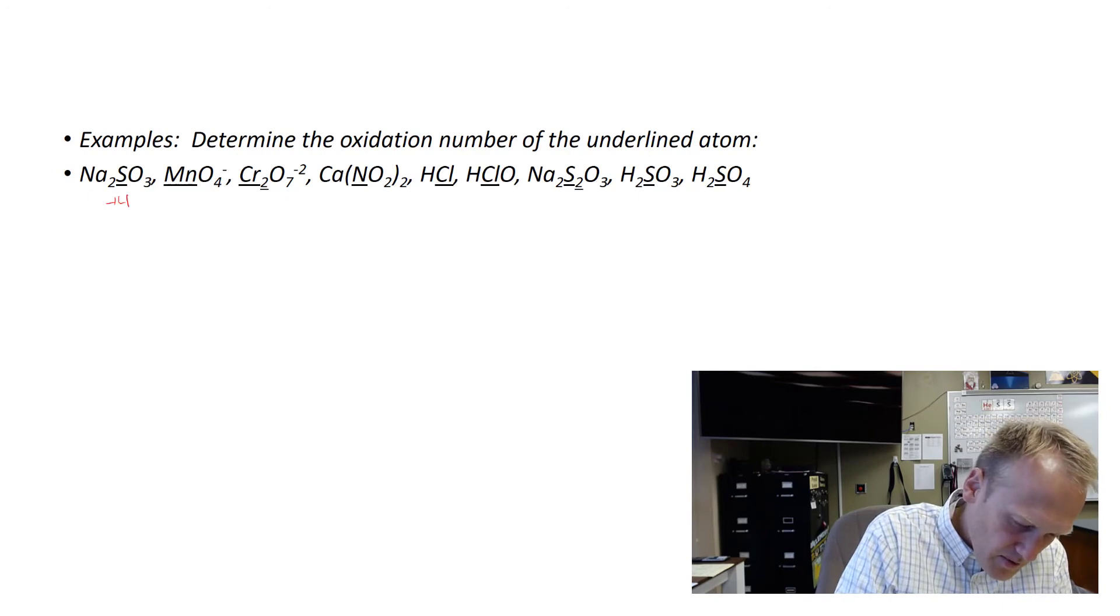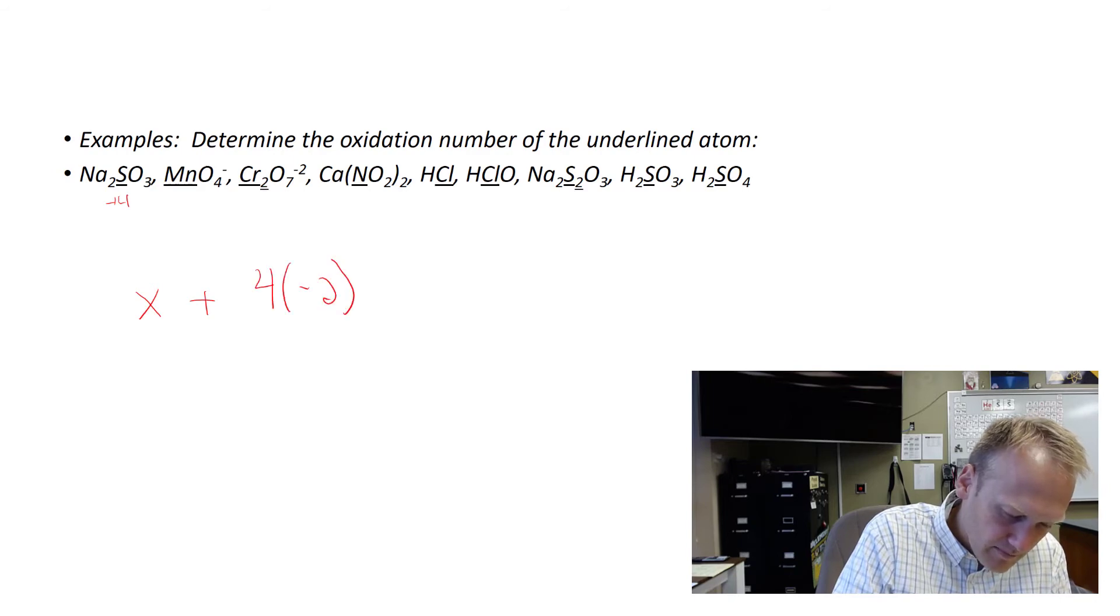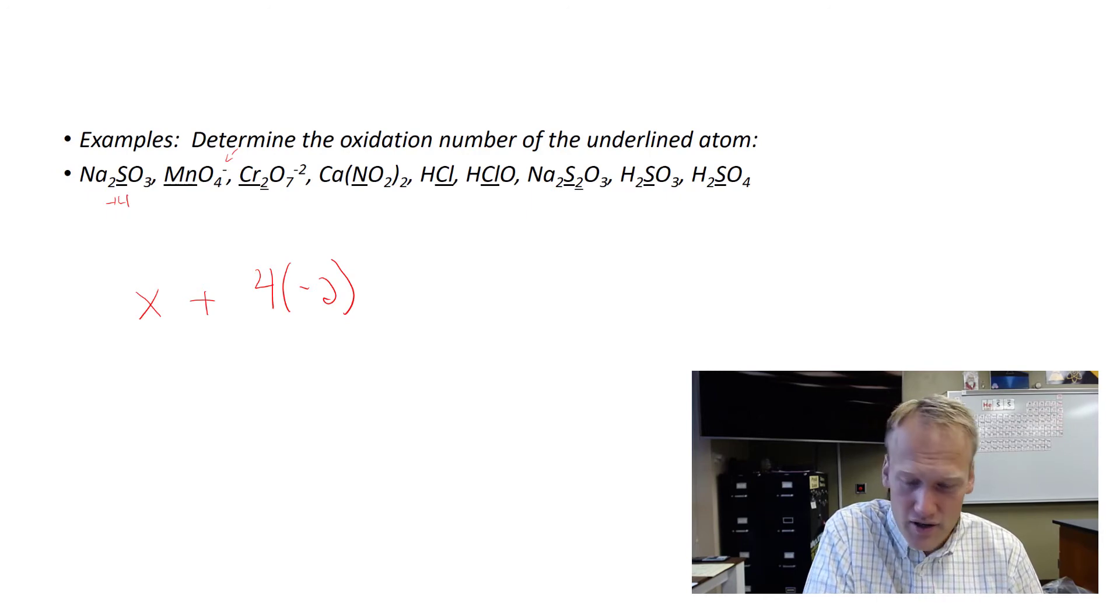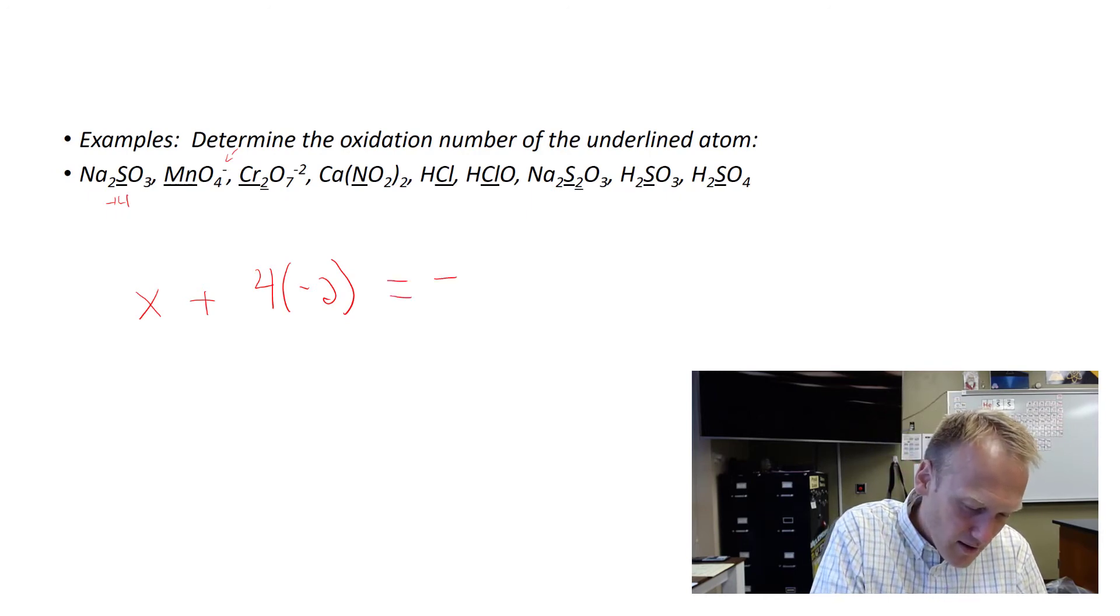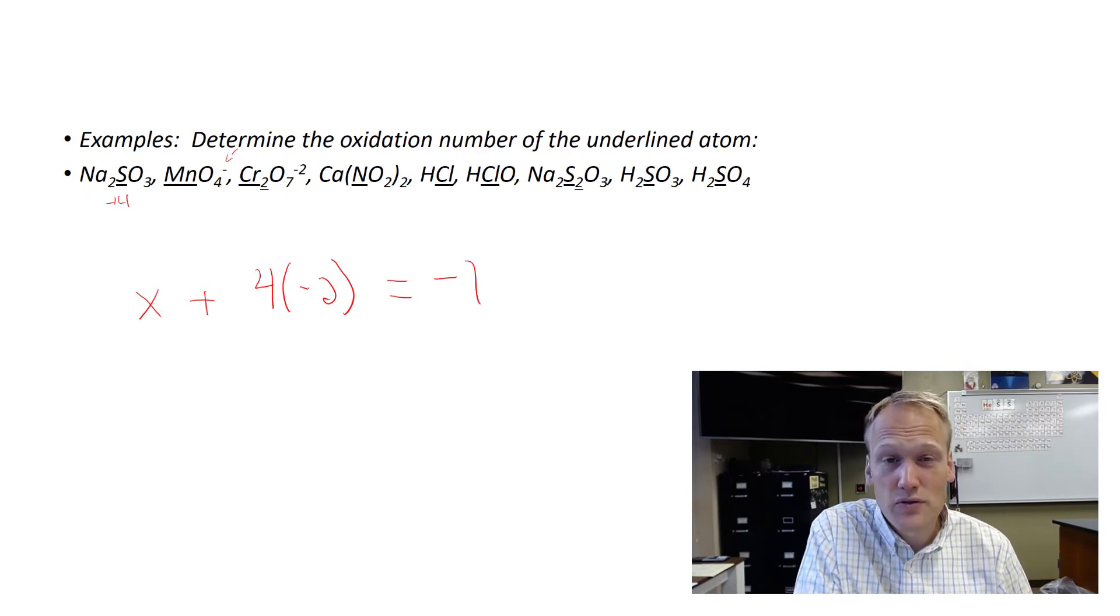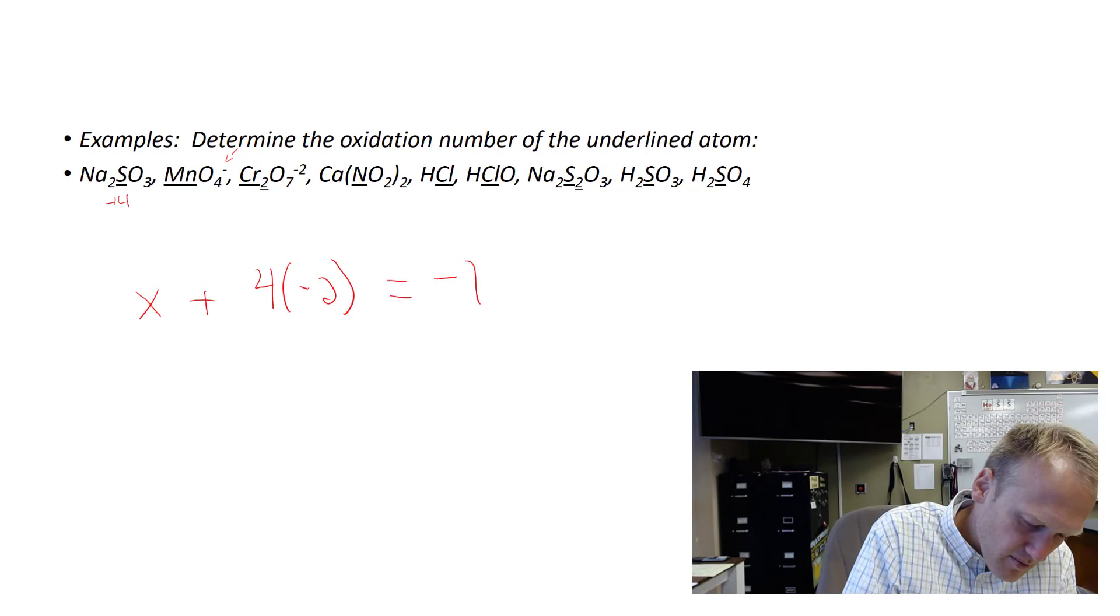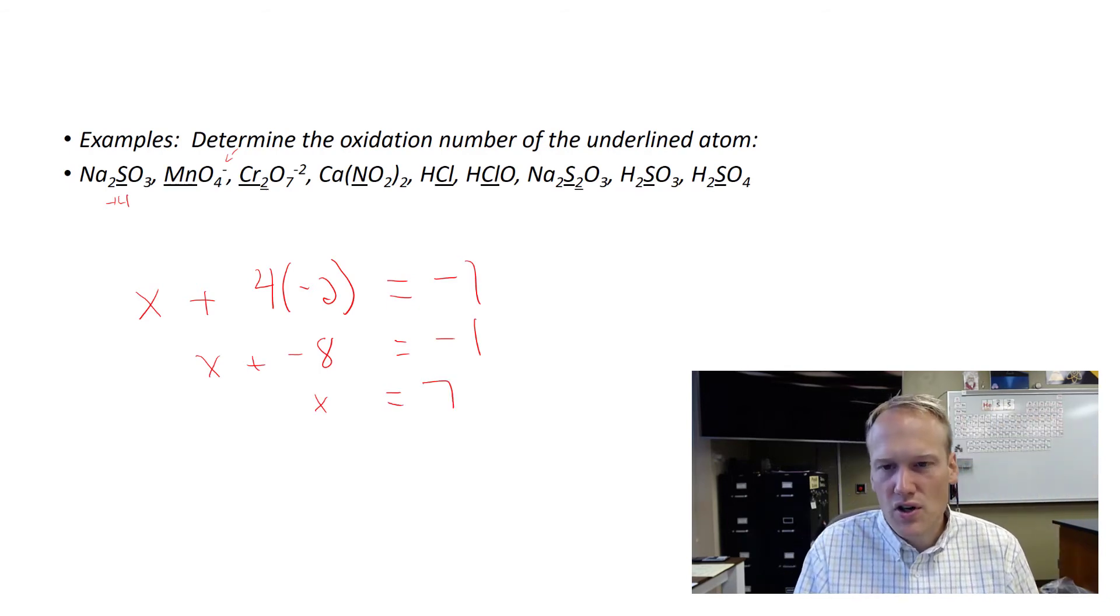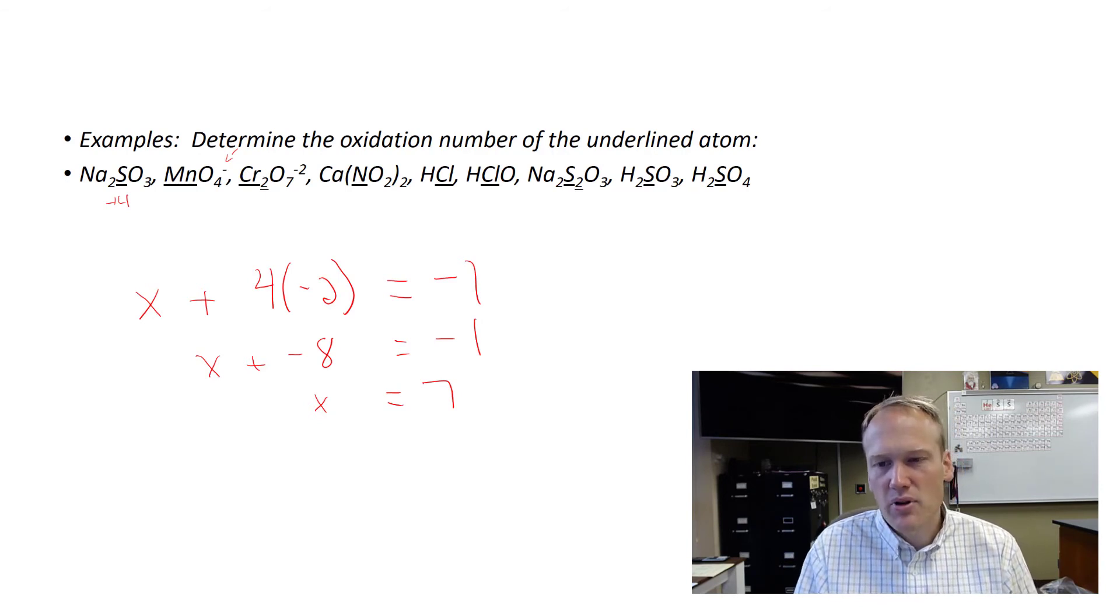We have manganese, which we don't know the charge of. And we have 4 oxygen, which are each negative 2. But notice something here. This is a polyatomic. This is not a neutral substance. It has a charge. It has a negative 1 charge. So that means we should set this equality equal to negative 1 because that's the overall charge of this ion. So now if we do the math, we get x plus negative 8 equals negative 1. We'd add 8 to both sides, and we'd see that x equals 7. So the perceived charge of this manganese atom is a plus 7.